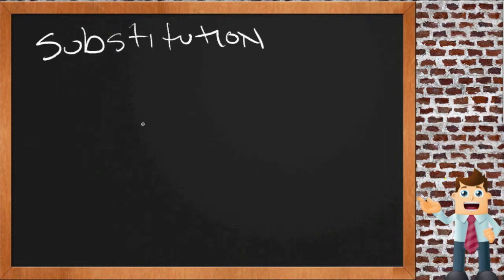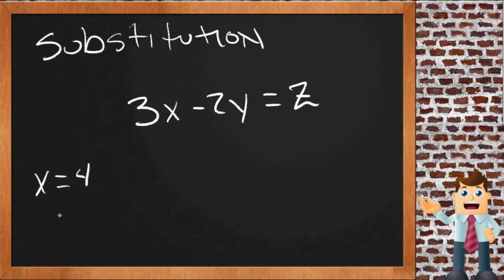So in substitution, you'll be given a statement, something like maybe 3x minus 2y equals z. And then what you're told is that specifically in this statement, x is maybe a 4, and y is 3.